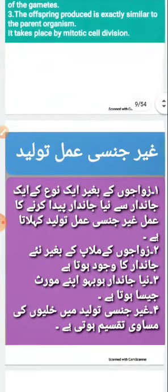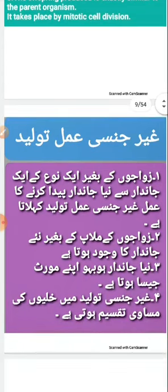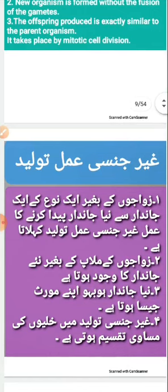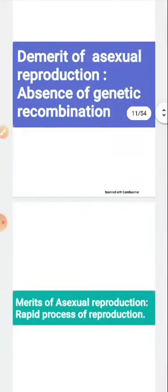Asexual reproduction takes place by mitotic cell division. In mitosis, one cell produces exactly the same cells with the same amount of genetic material transferred from the parental cell to new cells. There is a demerit and a merit of asexual reproduction. Let us first see the demerit.